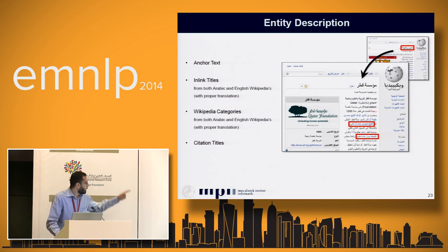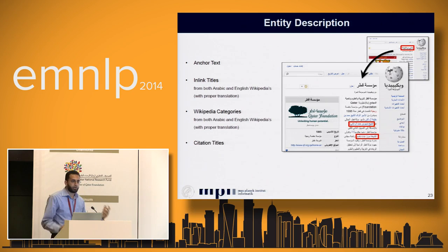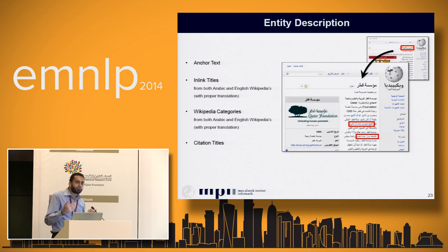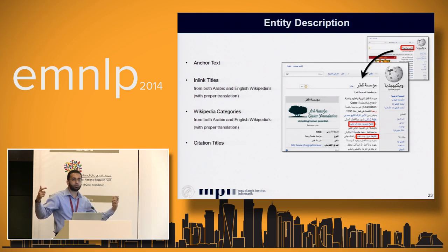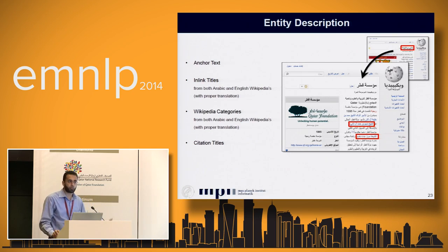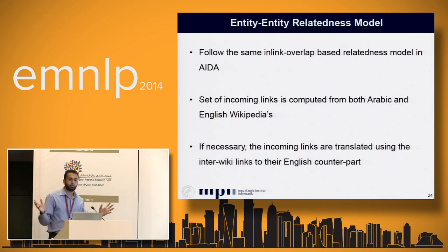For entity descriptions, we use anchor text with English link titles and use interwiki links for translation. For example, for 'Muassassat Qatar' (Qatar Foundation) we will have 'Nadi Barcelona' (FC Barcelona) as a key phrase — because in the Barcelona club Wikipedia page there is a link to Qatar Foundation as its sponsor. Even if this link doesn't exist in Arabic Wikipedia, we add this key phrase by mapping 'Barcelona club' to 'Nadi Barcelona' and 'Qatar Foundation' to 'Muassassat Qatar' via interwiki links — no machine translation. We do the same for Wikipedia categories, translating English ones using interwiki links, and include citation titles as-is.